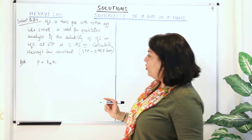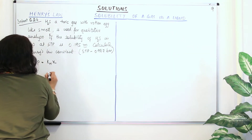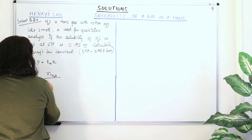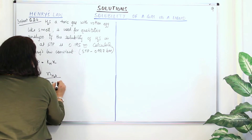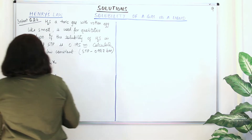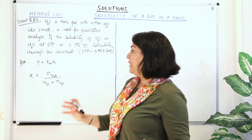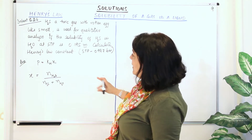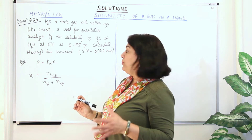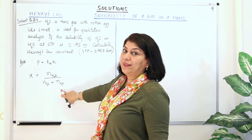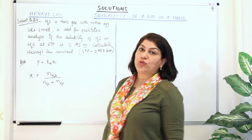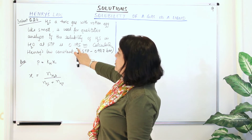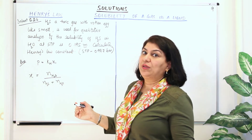Mole fraction of H₂S = number of moles of H₂S ÷ (number of moles of H₂S + number of moles of water). Let us assume we have 1000 grams of water. The mass of water is 1000 grams, so we can calculate the number of moles of water. And since molality is 0.195, the number of moles of H₂S in that much water is 0.195 moles. From these, we calculate the mole fraction of H₂S.